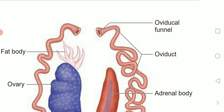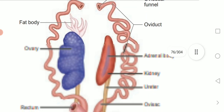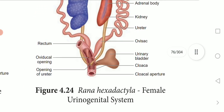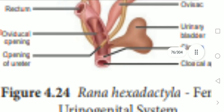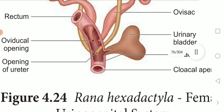Unlike the male frog, the female frog has separate genital ducts distinct from ureters. This is the opening of the ureters.